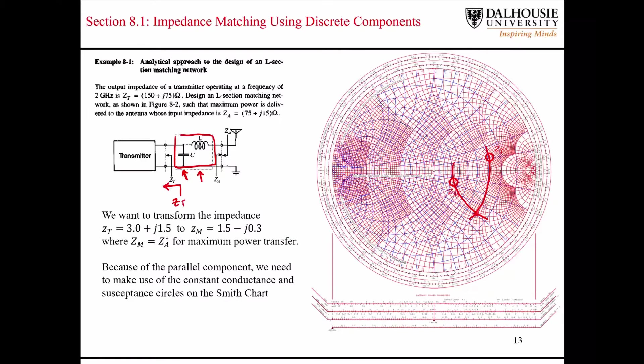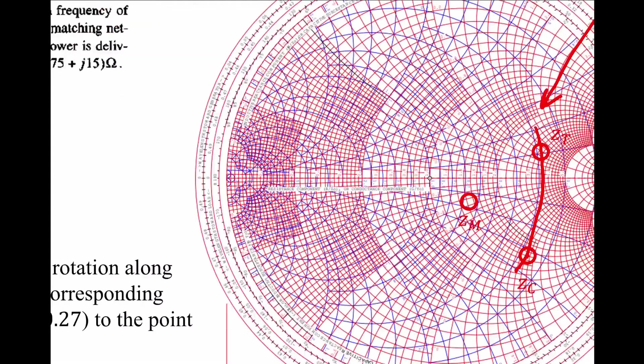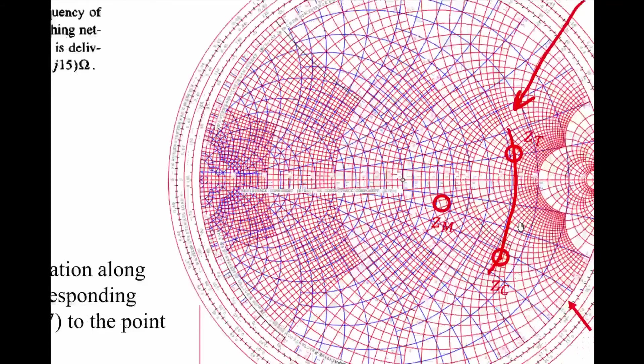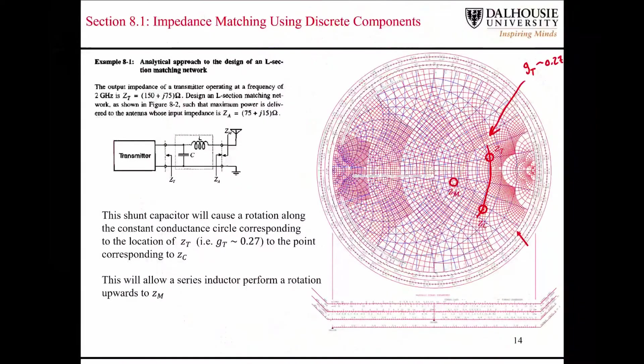Our intermediate point that we're looking for is the intersection of these two circles. The constant conductance circle that passes through Zt and Zc is around 0.27. I know that it's not easy for you to see, but you can see that there is a 0.2 right here and a 0.3 right here. So I'm estimating that value as around 0.27. The next thing we want to do is figure out the amount of admittance that we're adding in order to make this rotation.